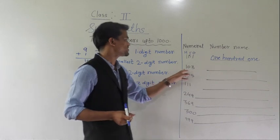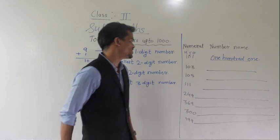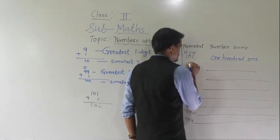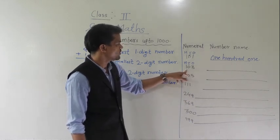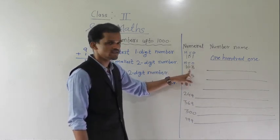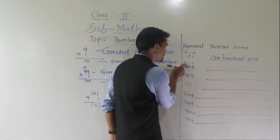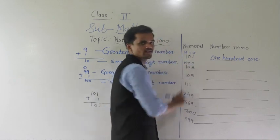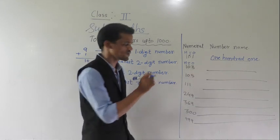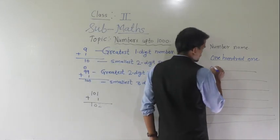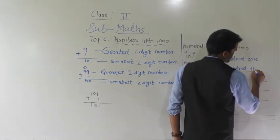Next number: 103. Write the positions of each digit — 1 place, 10 place, and 100 place. How many hundreds? 1. How many tens? 0. And how many ones? 3. So, read this number as 100 and 3 ones. Write that number: one hundred and three.